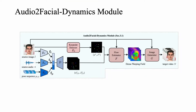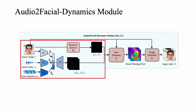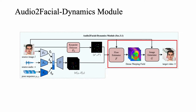Specifically, we first achieve neutral talking face generation from a single image through an audio-to-facial dynamics module. It maps audio representations and extracted poses to unsupervised key points and their first-order dynamics. An additional flow estimator and a generator then cope with the representations for image reconstruction.